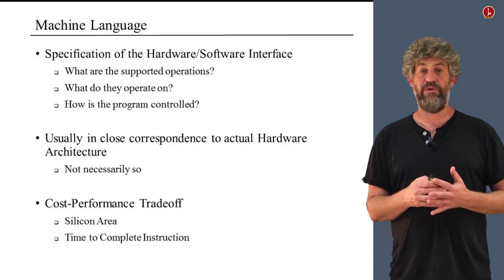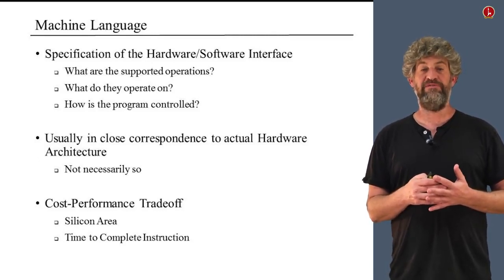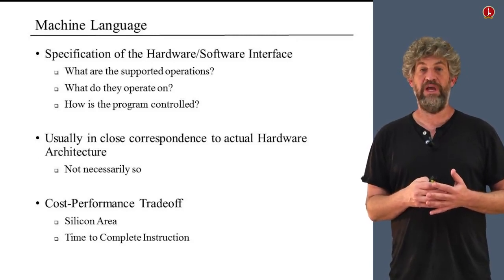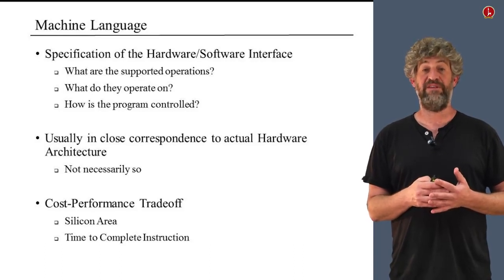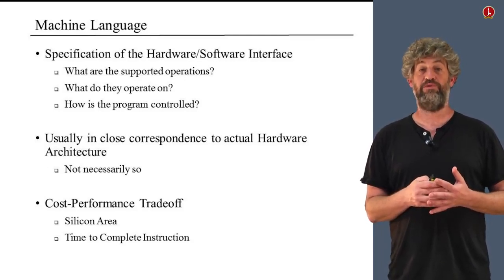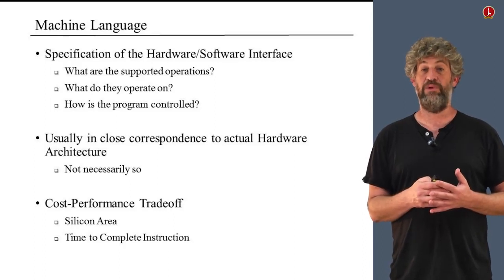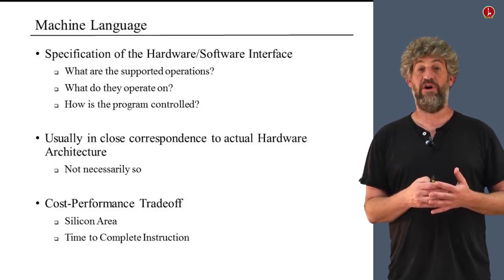Of course, when we actually go to design a machine language, the basic element is a cost-performance trade-off. The more sophisticated operations that we want to give our machine language, the more large or sophisticated data types it operates on, the more costly it will be to actually build this — costly in terms of area of silicon, costly in terms of time that the hardware needs to operate. In our computer, we're always taking this trade-off to the simplest, not really worrying about real performance. But in any real machine, the whole thing that drives the design of the machine language is a cost-performance trade-off.